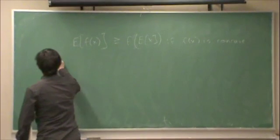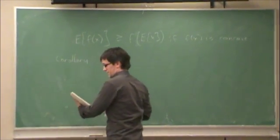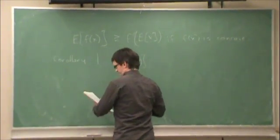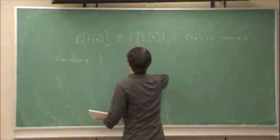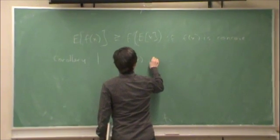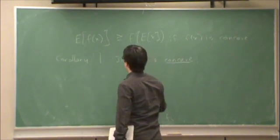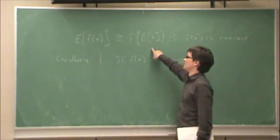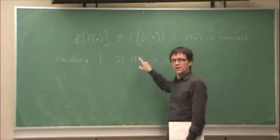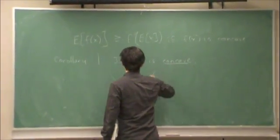A couple corollaries. The first one is the expected value of f of x. If f of x is concave, not convex. Then, actually what do you think would happen here, if it's concave? The direction of the inequality. The direction of the inequality changes. So, what's different?